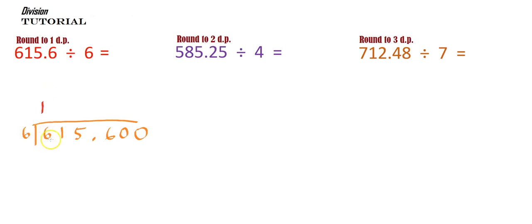6 going into 6, that goes once. Finish with that. 6 going into 1 goes 0 times, and the 1 is now carried over here. 6 into 15 is 2, and I have 3 left over. I'm up to the decimal point, so take the decimal point up and put it in straight away. Okay, 6 into 36 goes 6, and that is complete.